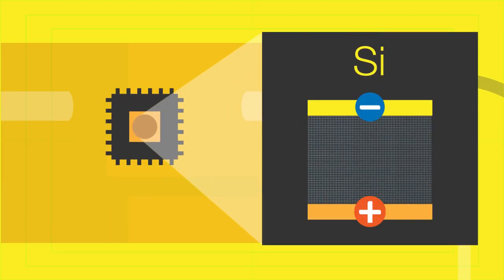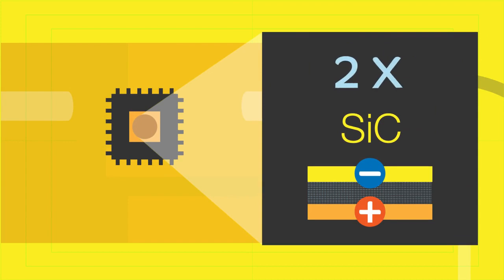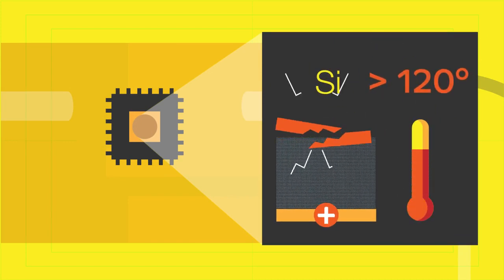Until recently, silicon was used to manufacture semiconductors. A more efficient solution, silicon carbide, cuts energy loss in half and can withstand much higher temperatures.